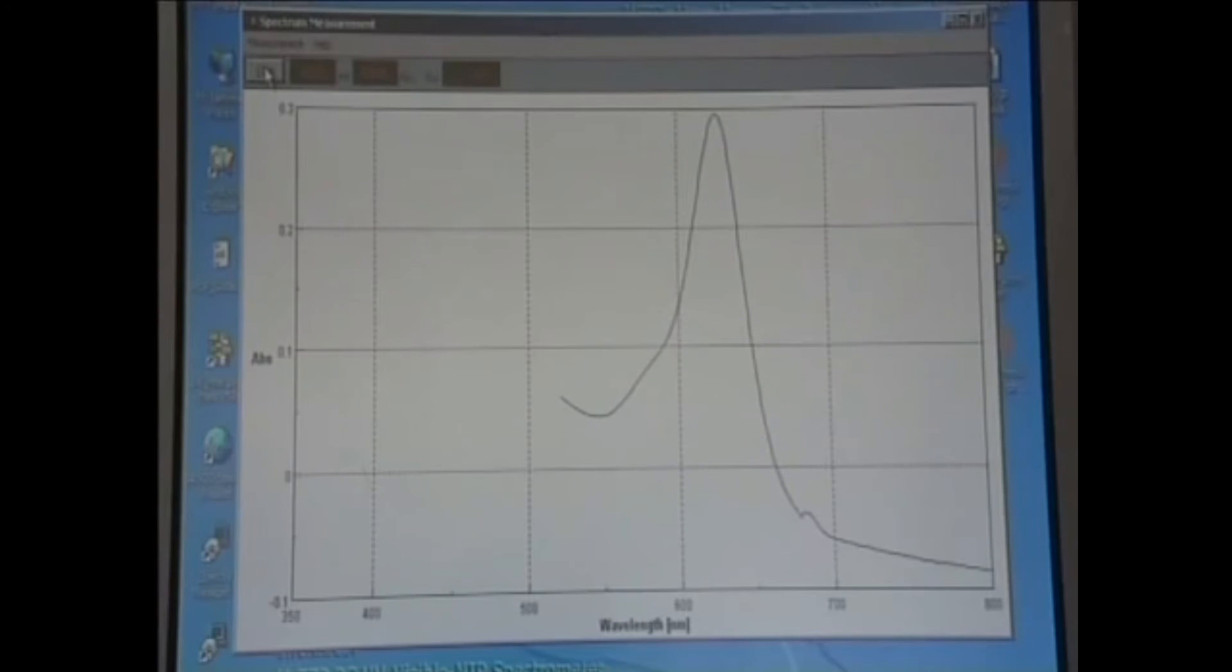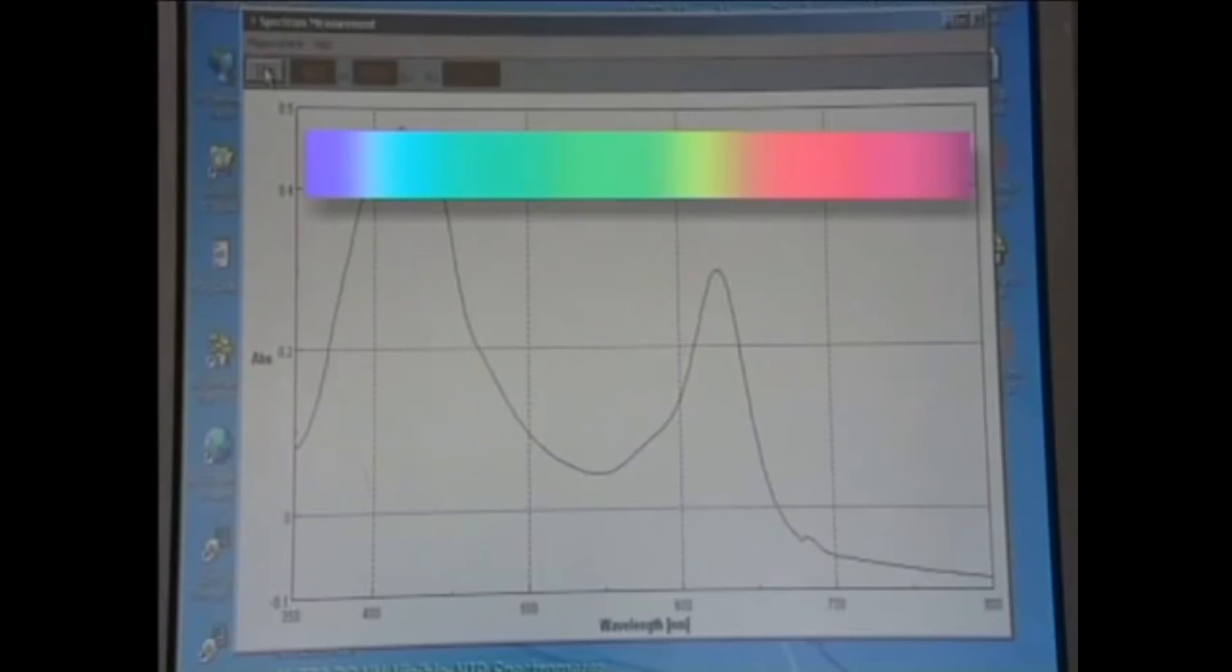The horizontal axis is normally wavelength and the vertical one absorbance, which is a measure of the amount of light absorbed by the sample. The peaks on the spectrum are the wavelengths of light that are absorbed by the sample, and the troughs are where light passes through. So the dye absorbs orange and blue light and lets through green, so it appears green in colour.